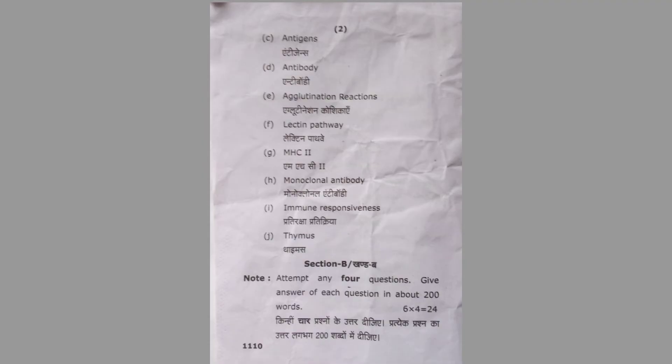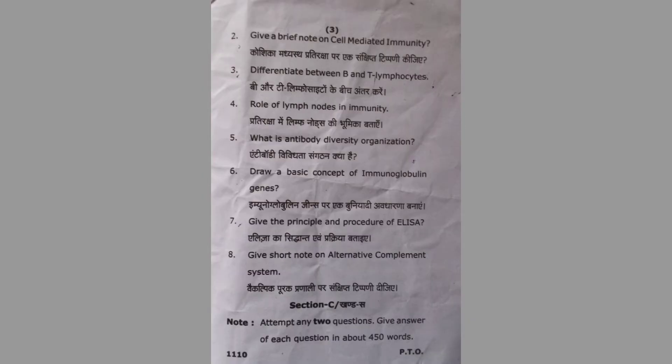(j) Thymus. Section B, Question Number Two: Give a brief note on Cell Mediated Immunity. Question Number Three: Differentiate between B and T lymphocytes.